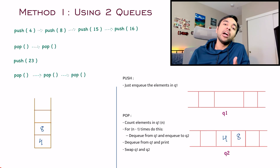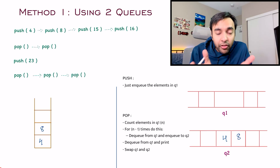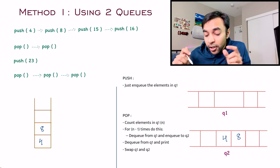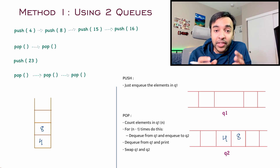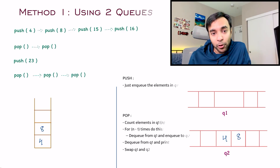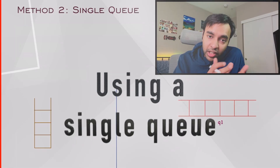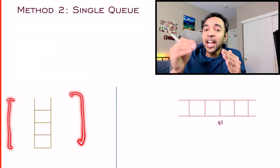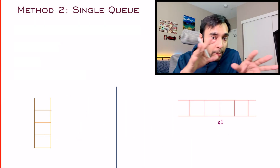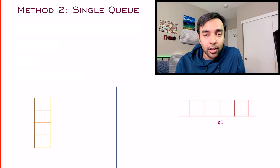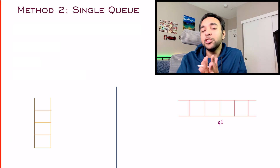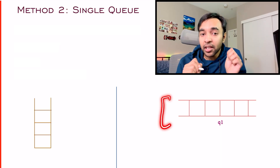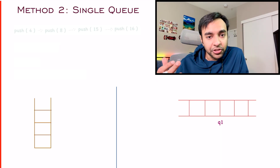Your interviewer can now ask: can you achieve all of this just by using a single queue? So that is one improvement. Let's see what we can do about it. On the left side we have a standard stack data structure to help us mimic the operations, and this time we just have to use a single queue.